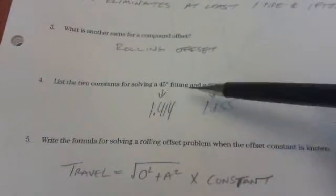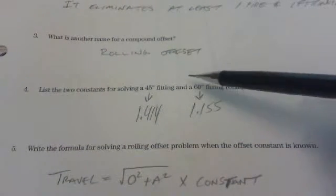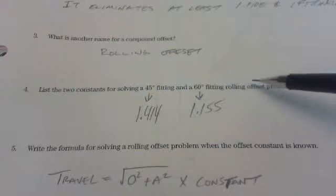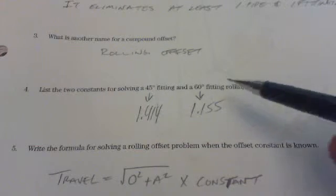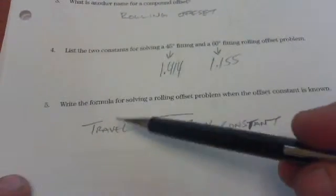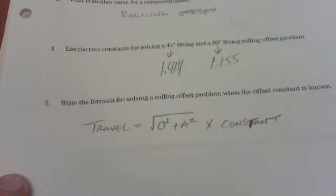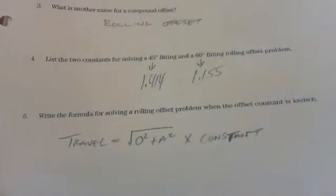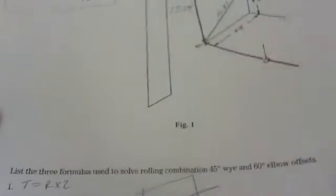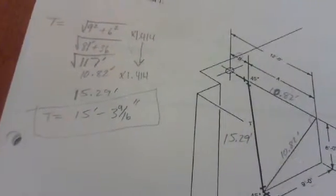So for 4, they're talking about what constants you'll use for 45 and 60 degree fittings for roll-off offset problems. There they are. And for 5, they'll ask you what the formula is when you have a known constant. And then for 6, they ask you to plug in the numbers and start using it.